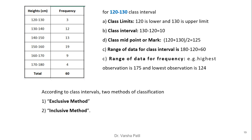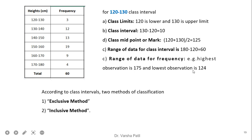The range of data for the class interval is 180−120 = 60, since the maximum limit is 180 and the first class lower limit is 120. The range of data for frequency is calculated from the actual data: for example, if the highest observation is 175 and the lowest is 124, then the range = 175−124 = 51. After covering these terms, we move to the two methods of classification: exclusive and inclusive.